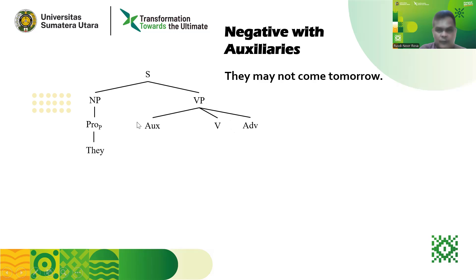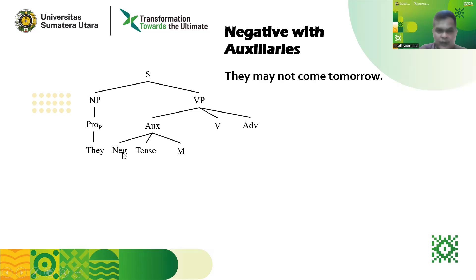Auxiliary here is only needed in the deep structure. As you can see, the sentence analyzed is a negative sentence. So we have here 'negative' as one of the branches of the auxiliary. And then we have here 'tense' and we have here 'M' or 'modal.' Why do we use modal here? Because the negative sentence in our example uses 'may.'